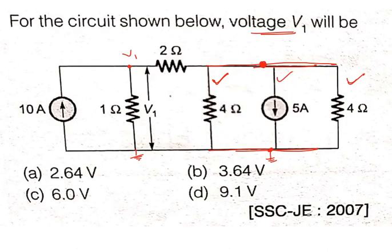So the answer is 6 volts. For this kind of circuit we can solve like this — instead of directly applying nodal analysis, if we reduce the circuit first and then apply nodal analysis it becomes so easy. That is nodal analysis, which is nothing but KCL. Thanks for watching this video, please like and share it with your friends, and don't forget to subscribe for more videos. Thank you.